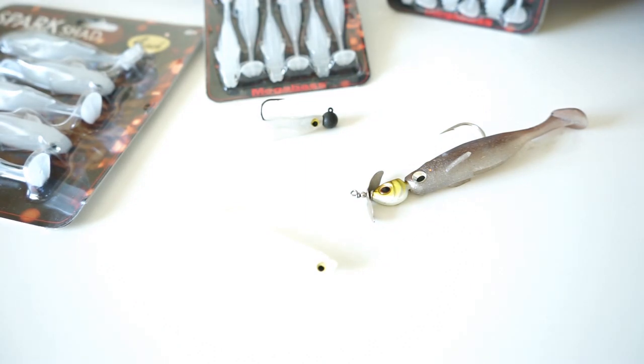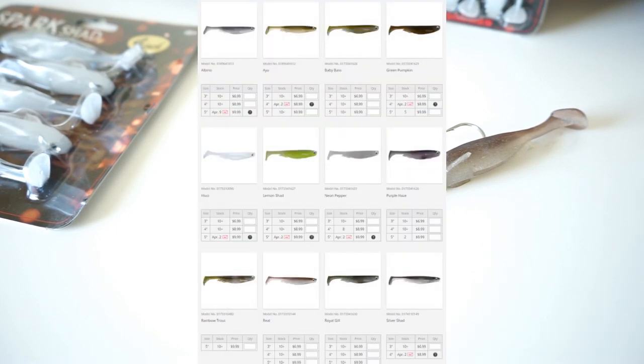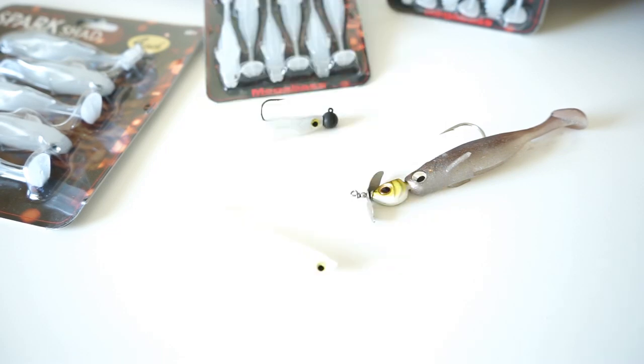Let's get into it. The Megabass Spark Shad has got to be one of my favorite finesse-type swimbaits. They make these in different colors and sizes, and my favorite is the 3-inch and the 4-inch.